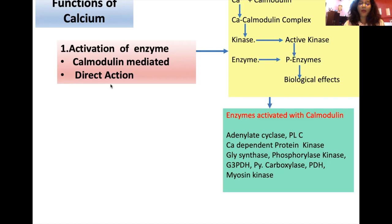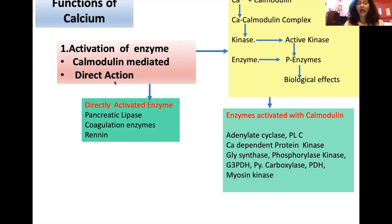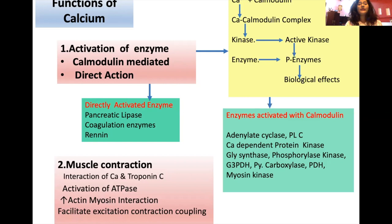The second type of enzyme activation is direct action by calcium. Enzymes activated directly by calcium include pancreatic lipase, coagulation enzymes, and rennin — a proteolytic enzyme secreted in the stomach, found in infants.